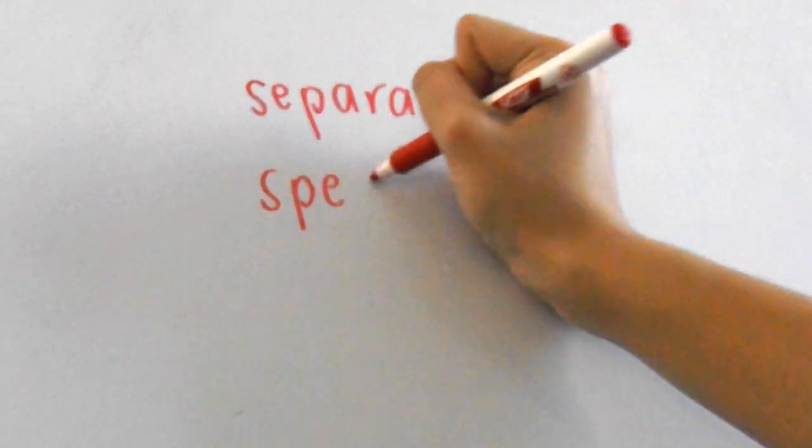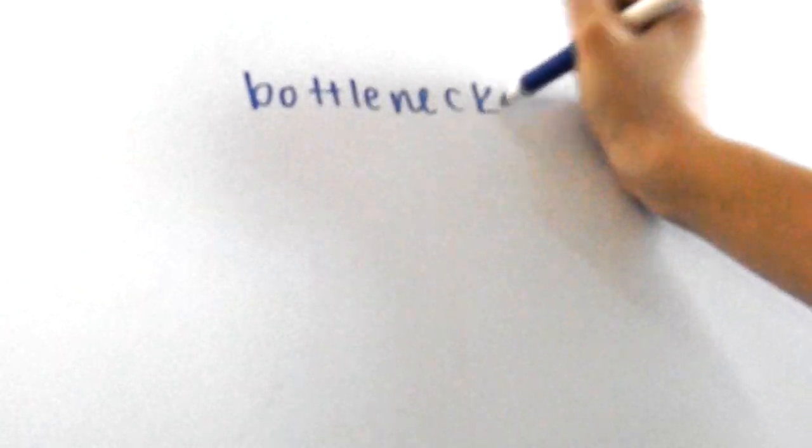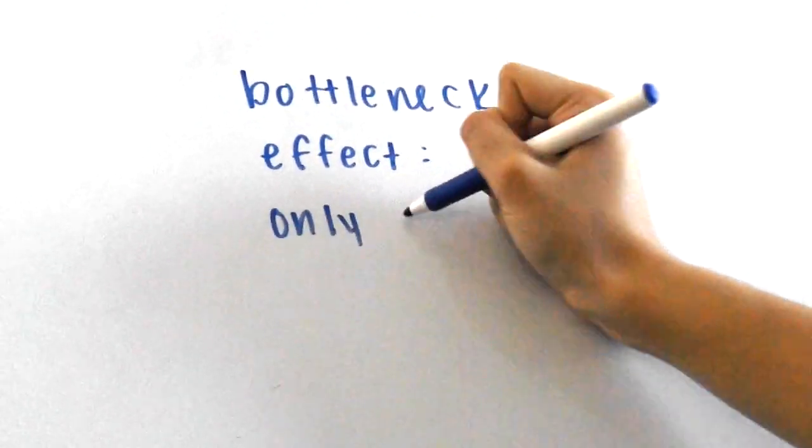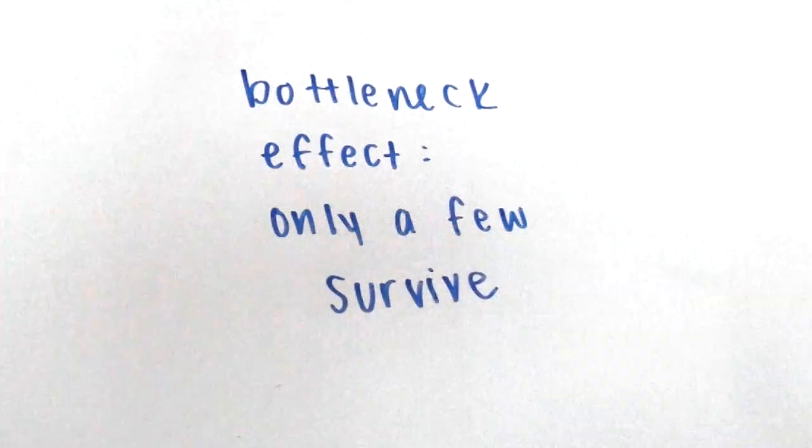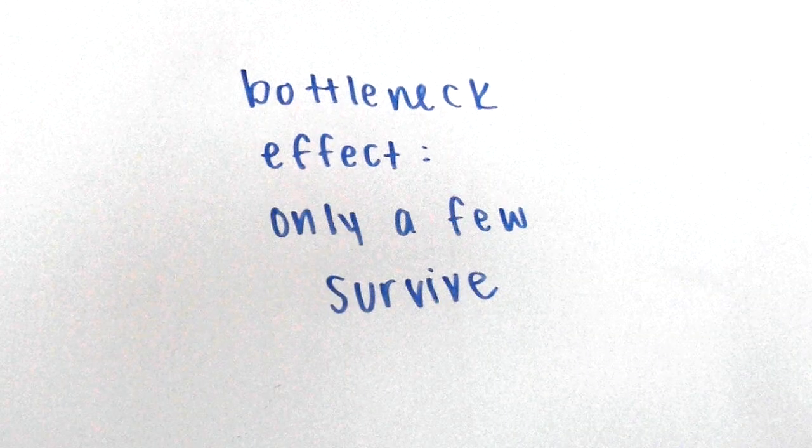The bottleneck effect is another type of genetic drift and it's called that because it's like shaking marbles out of a bottle. Since the neck of the bottle is so narrow, only a few individuals are able to survive from a random and sudden change in the environment.